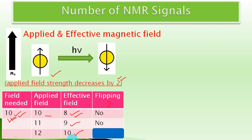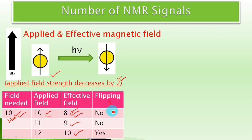Now the effective field strength felt by the nucleus is 10 gauss, which is exactly the field strength needed for flipping. So in this third experiment, the nucleus absorbs a particular electromagnetic radiation and flips. Through these fictitious data experiments, we learned that due to certain factors, an NMR active nucleus placed in an external magnetic field does not feel the full applied field strength.